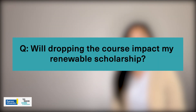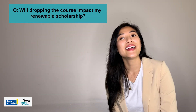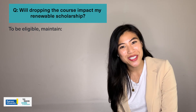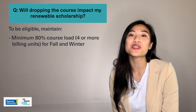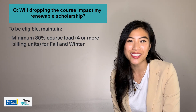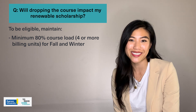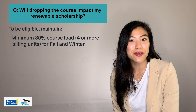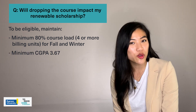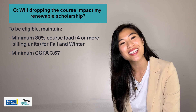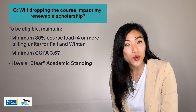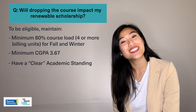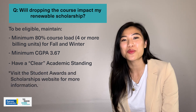Will dropping the course impact my renewable scholarship? To be eligible for a renewable scholarship, you must maintain a minimum course load of 80%, meaning four or more billing units, in both your fall and winter semester. You also must maintain a minimum cumulative grade point average of 3.67 and have a clear academic standing. For the full requirements, visit the Student Awards and Scholarship website.